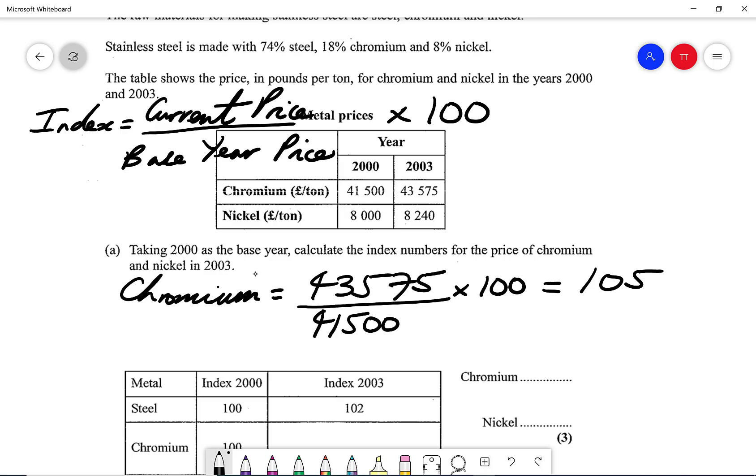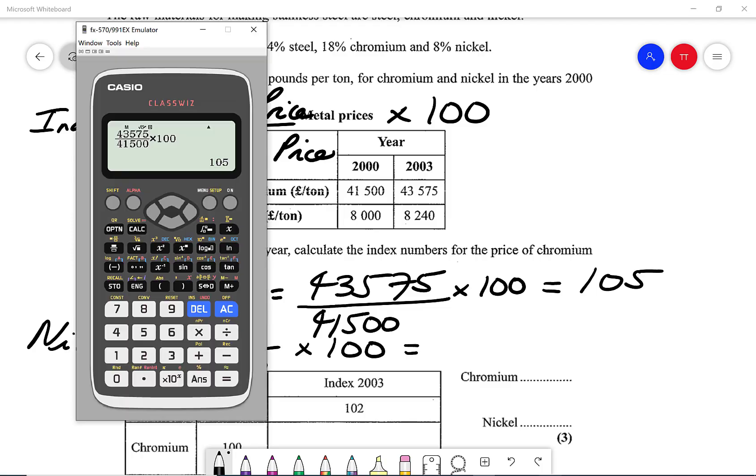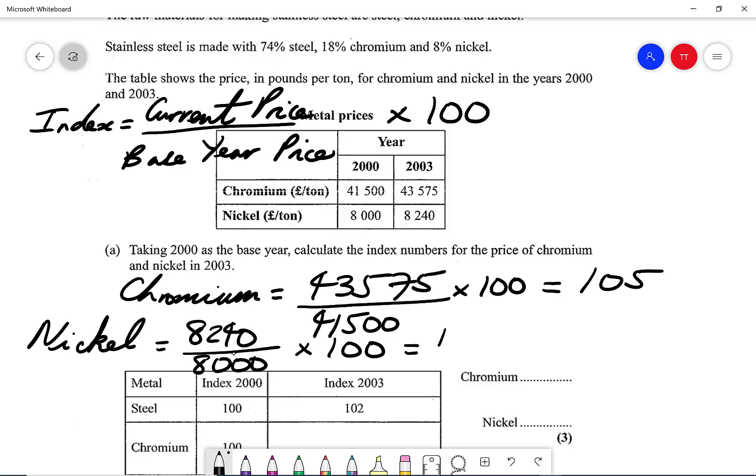Then I'm going to do the same for nickel. So that's going to be the current price of that, 8,240 over 8,000 times that by 100. And on my calculator, that will give me a value of 103. So we can verify that: 8,240 over 8,000 times that by 100 here, and that will give me 103. And those would be my answers: 105 and 103 respectively.